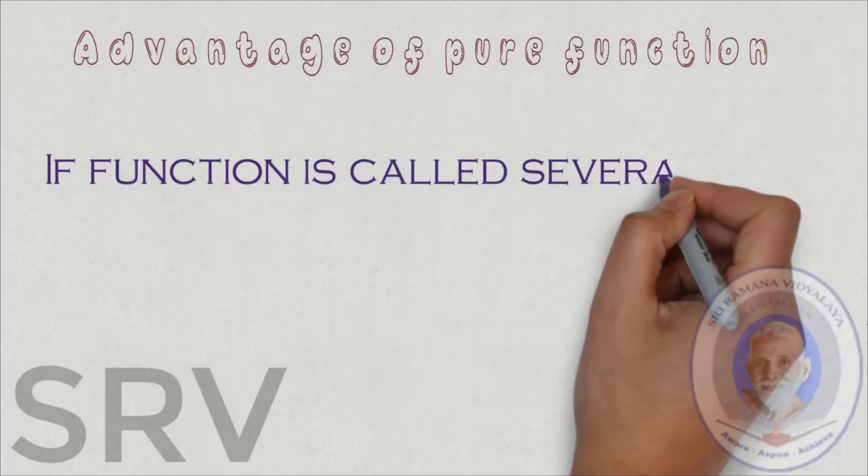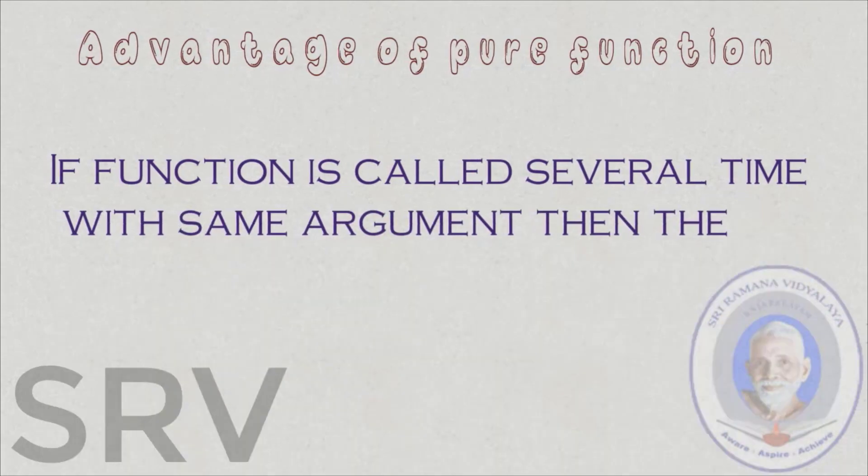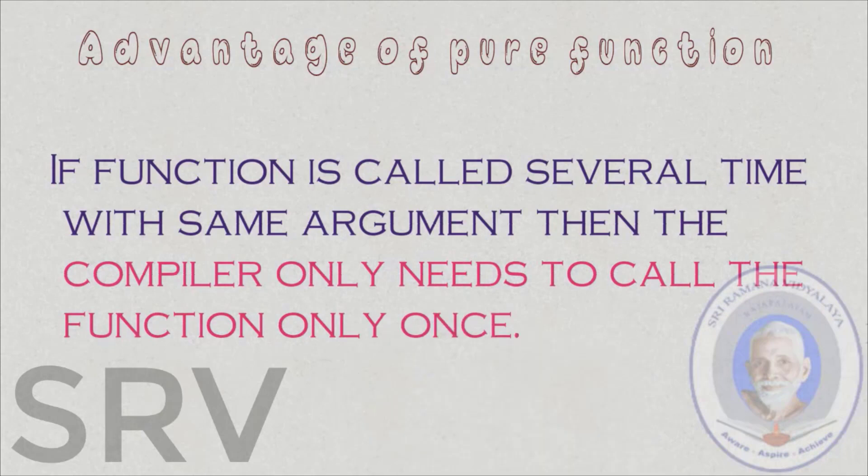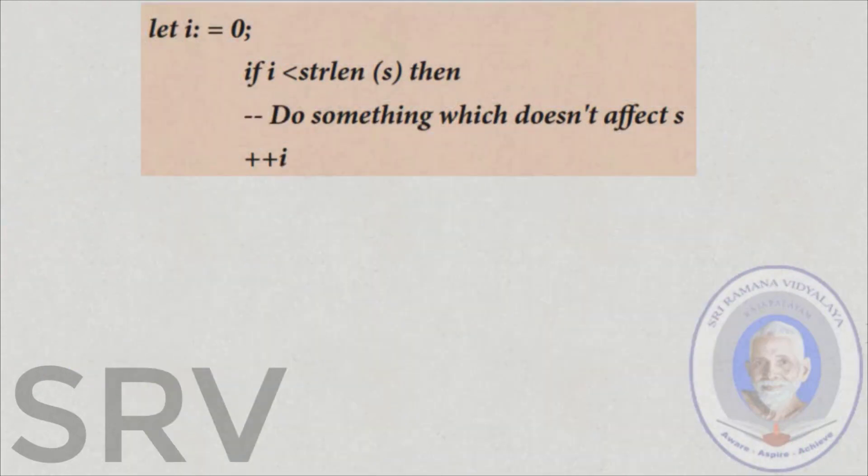If the function is called several times with the same argument, then the compiler only needs to call the function only once. Let's see with an example.